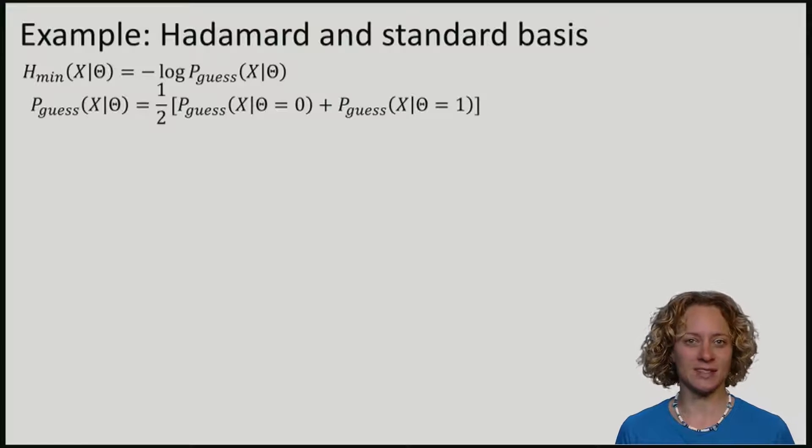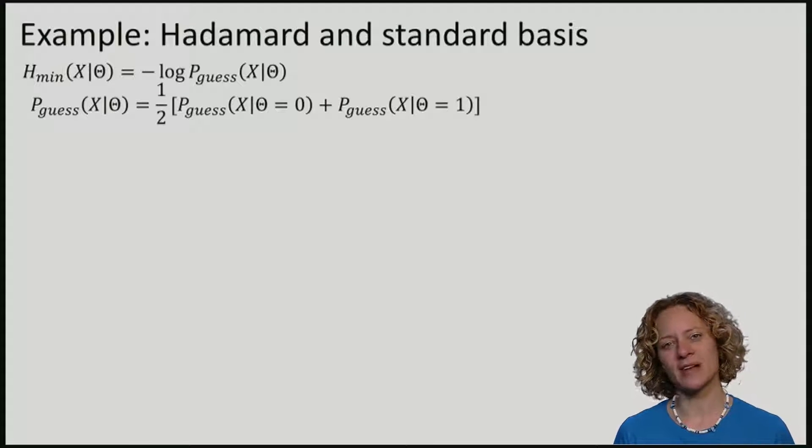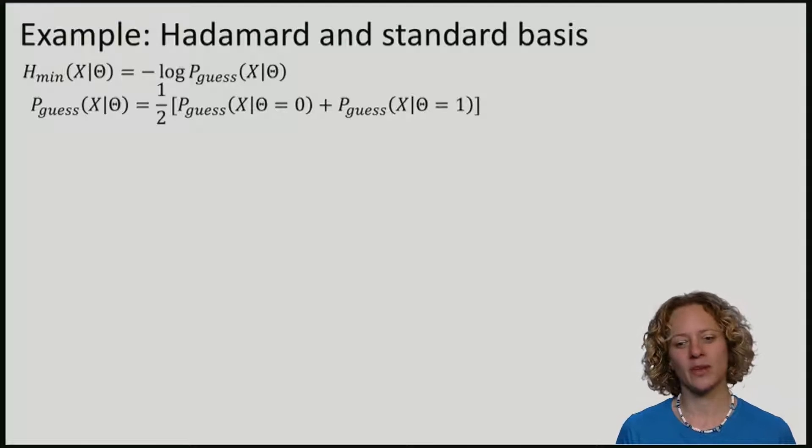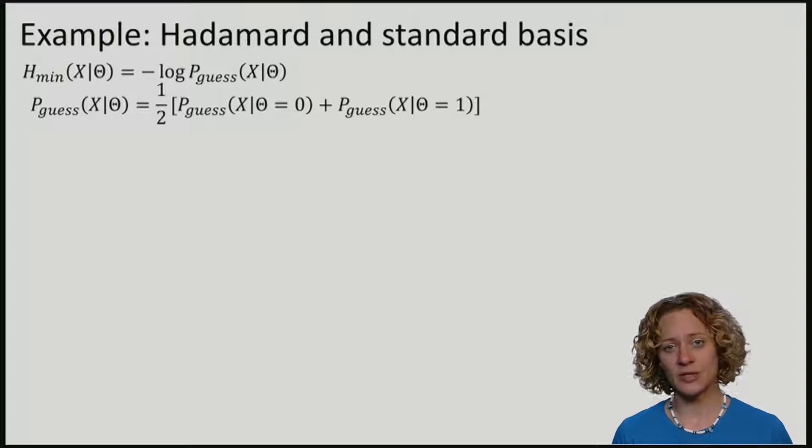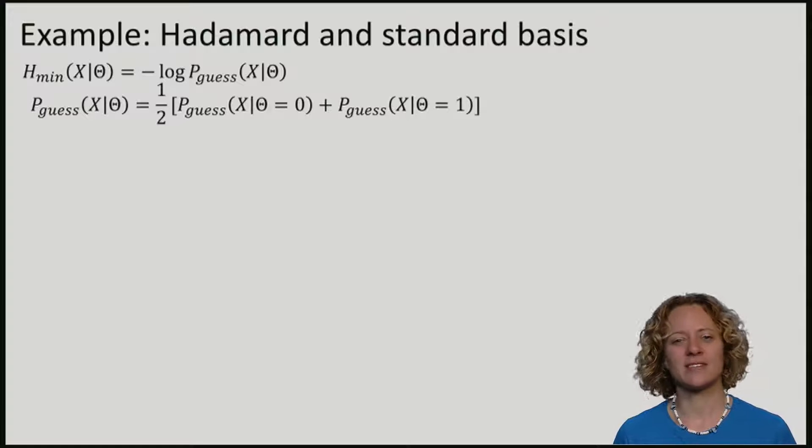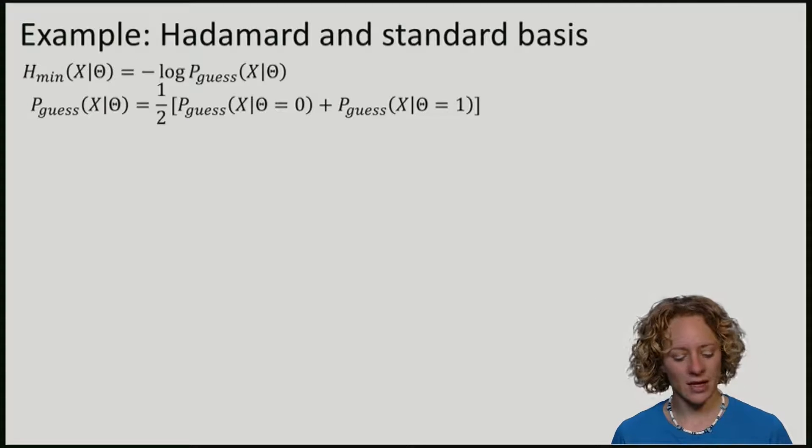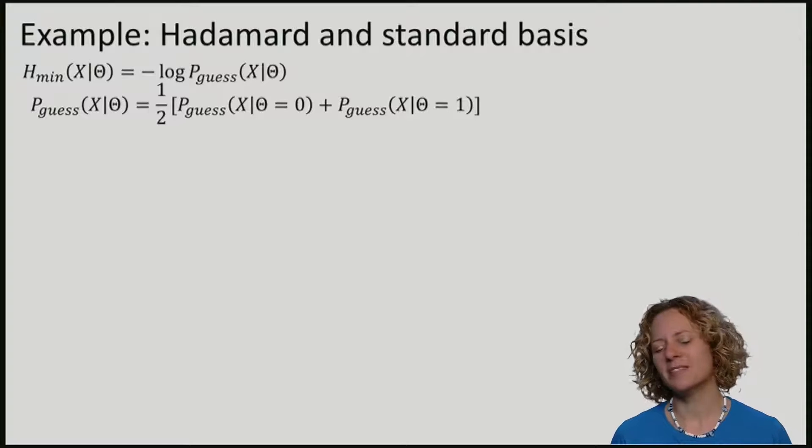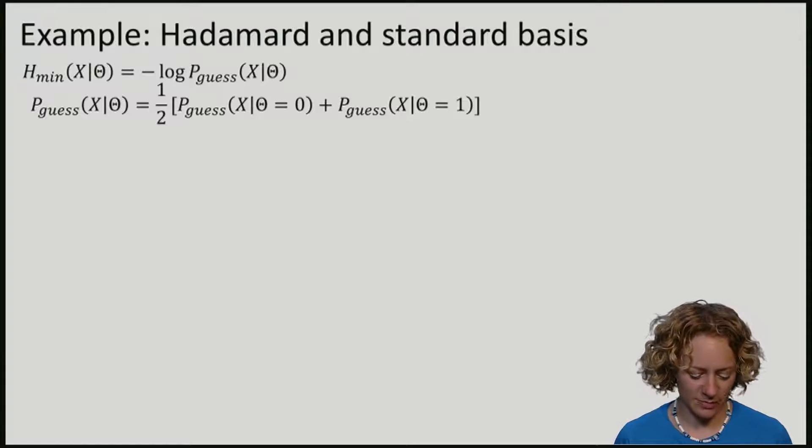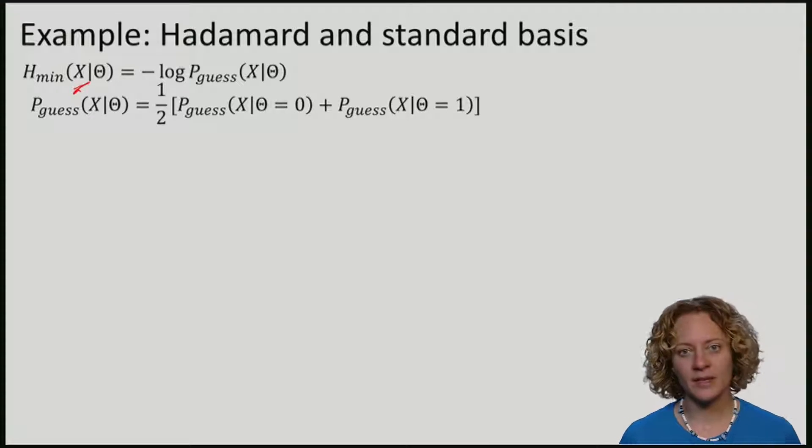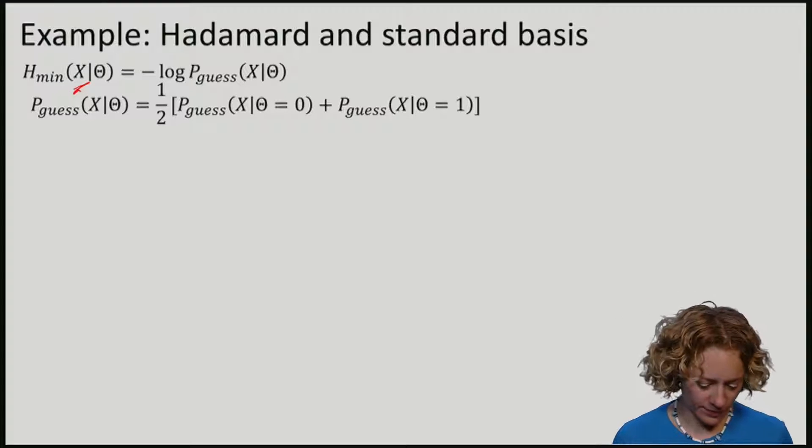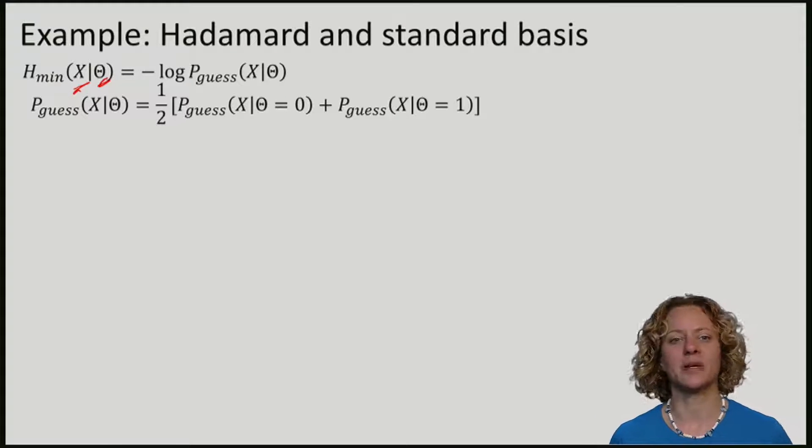Let's now consider an example in which Alice measures in the Hadamard or in the standard basis. Eve keeps no information and just sends a state rho A to Alice. What we want to compute is the min entropy of Alice's measurement outcome X given theta. So theta is held by Eve.